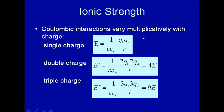This equation here you may remember as Coulomb's Law from Introductory Physics. It says that the energy of interaction between two charges q1 and q2 is inversely proportional to their distance, with the proportionality constant involving the dielectric constant and the permittivity of space.